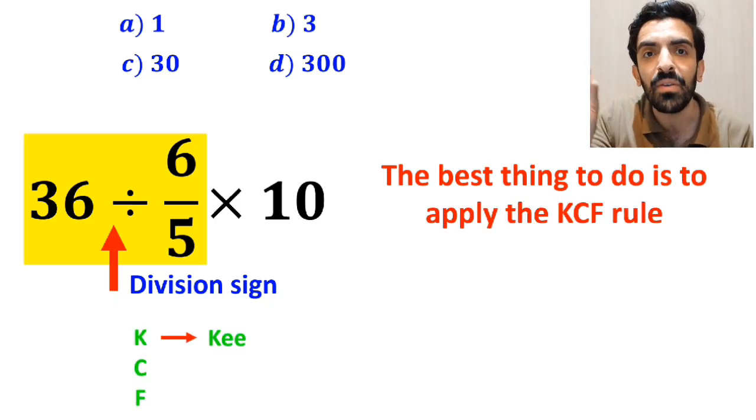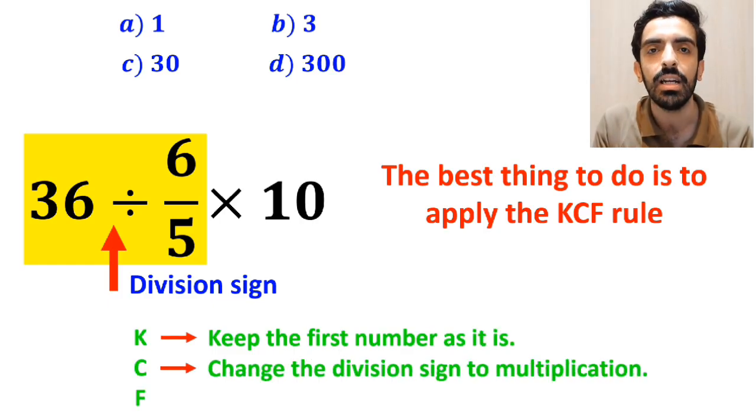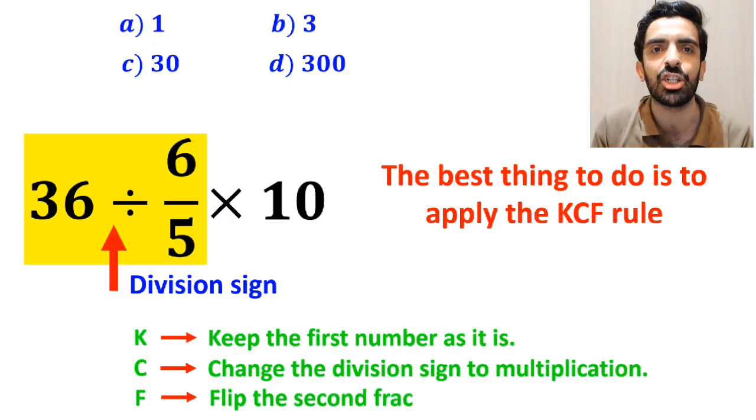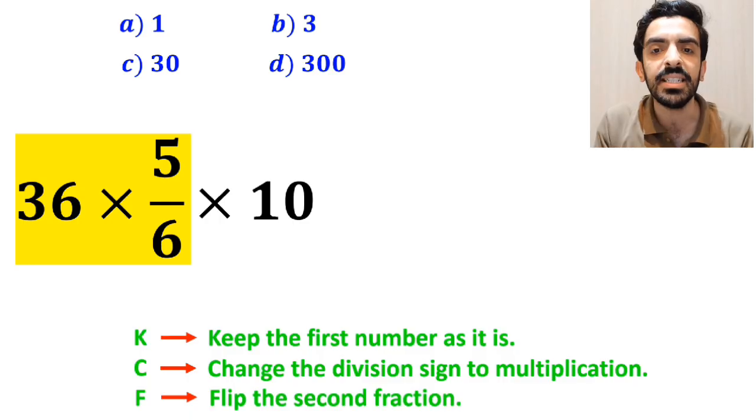In this rule, K stands for keep the first number as it is, C stands for change the division sign to multiplication, and F stands for flip the second fraction. So, we remove the highlighted part and rewrite this expression as 36 times 5 over 6, then multiply by 10.